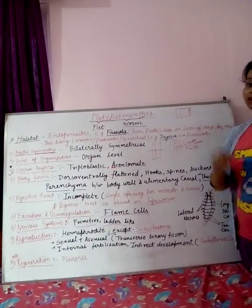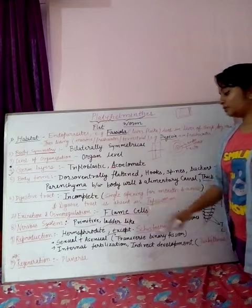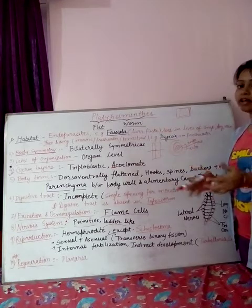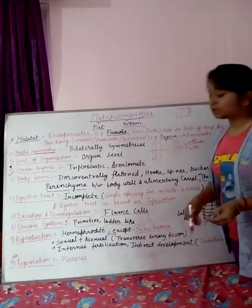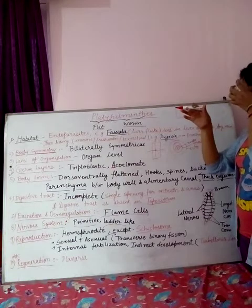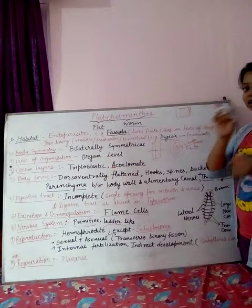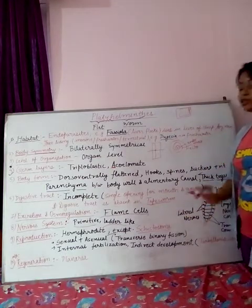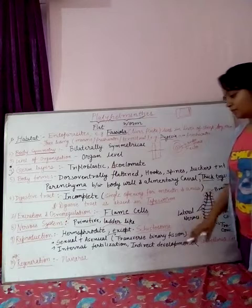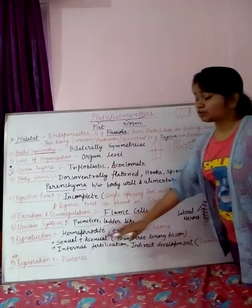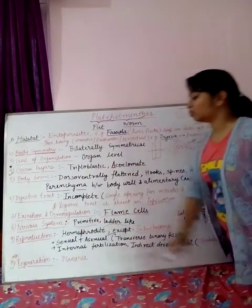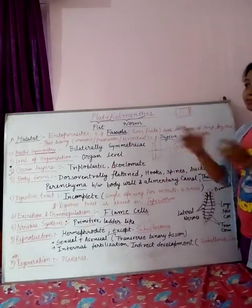Reproduction happens by both sexual and asexual forms. They are hermaphrodites, meaning both female and male gonads are found in the same organism, so they don't need to search for a mate — the male gonad gets inserted into the female gonad easily. An exception is Schistosoma, which is dioecious, meaning male and female gonads are found in different organisms. If they follow asexual mode, they undergo transverse binary fission, and if sexual, internal fertilization takes place inside the female body.